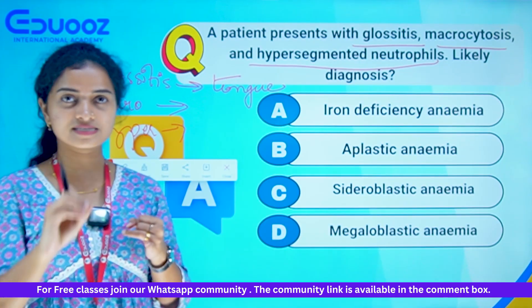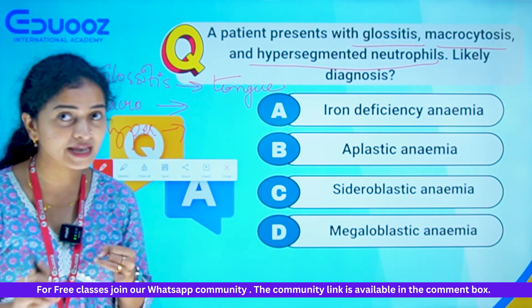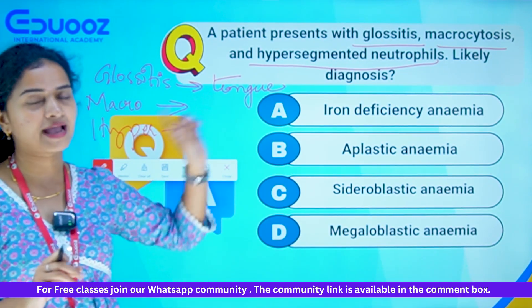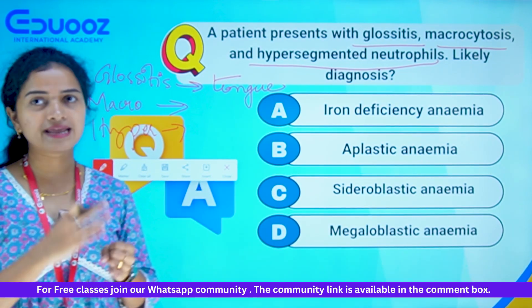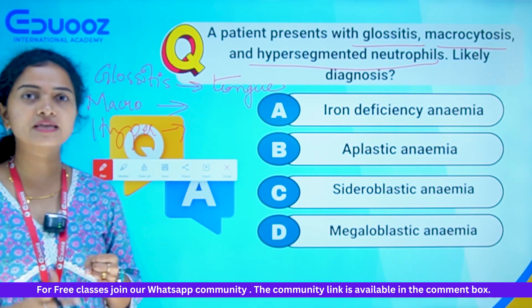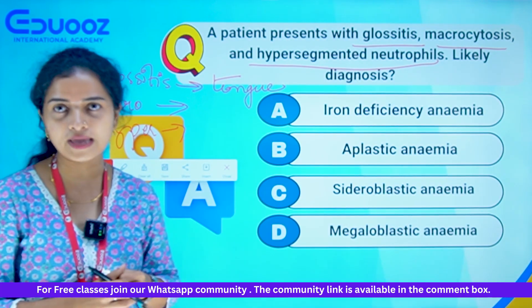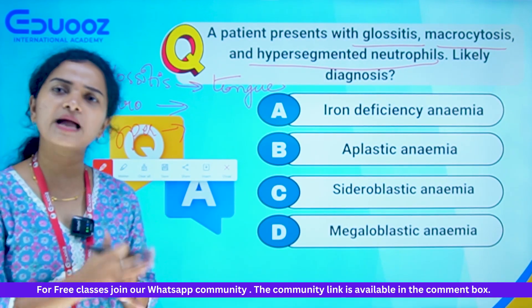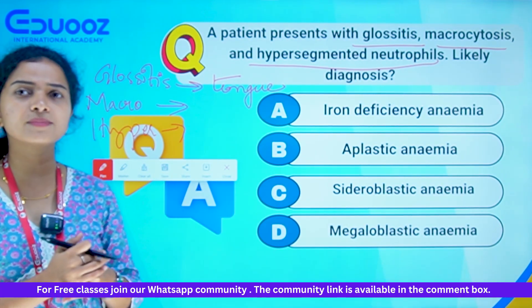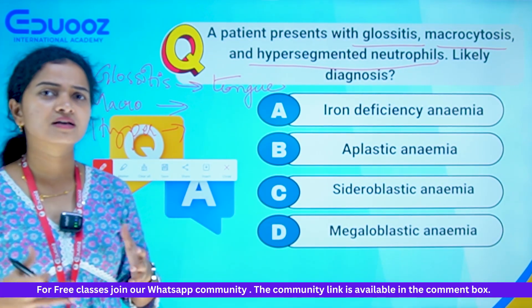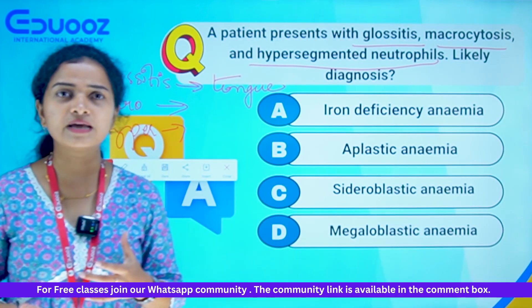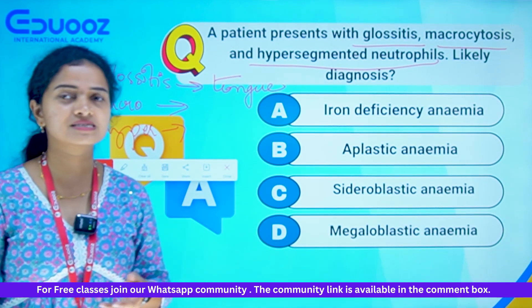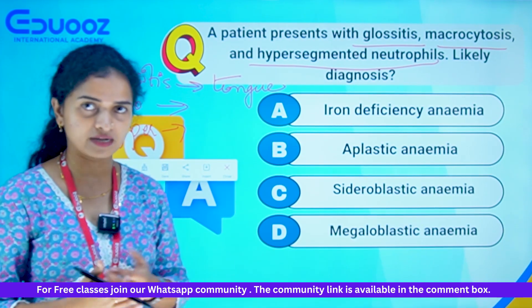Iron Deficiency Anemia is microcytic. Aplastic Anemia involves no synthesis of WBC or RBC, as we discussed in the previous question.